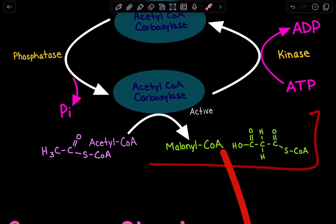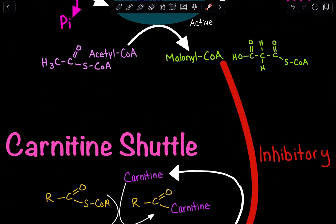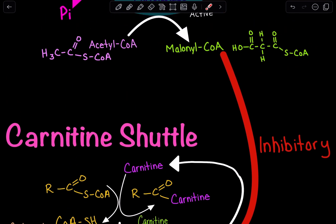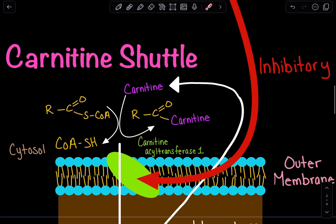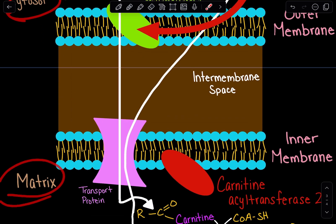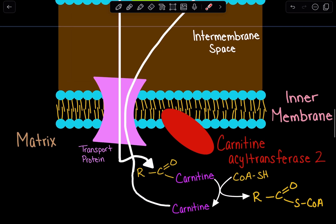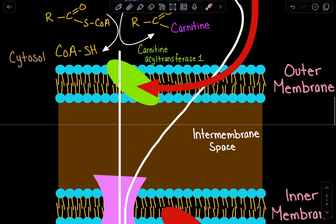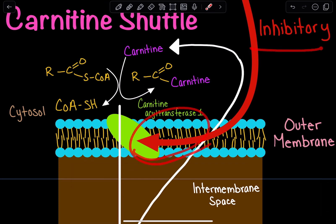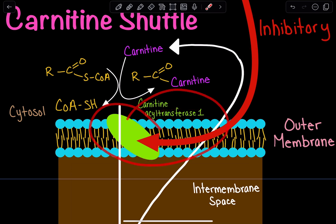Malonyl-CoA inhibits a protein enzyme found in the carnitine shuttle. The carnitine shuttle transports long-chain fatty acids from the cytosol to the inner mitochondrial matrix for beta-oxidation to produce energy. Malonyl-CoA has an inhibitory effect on carnitine acyl transferase 1.